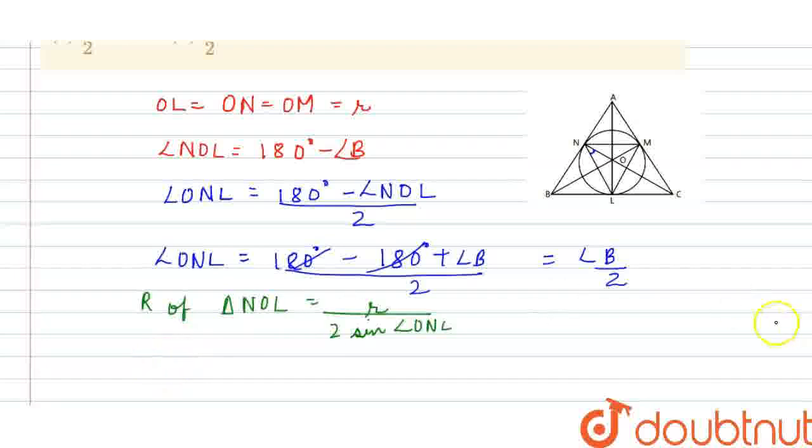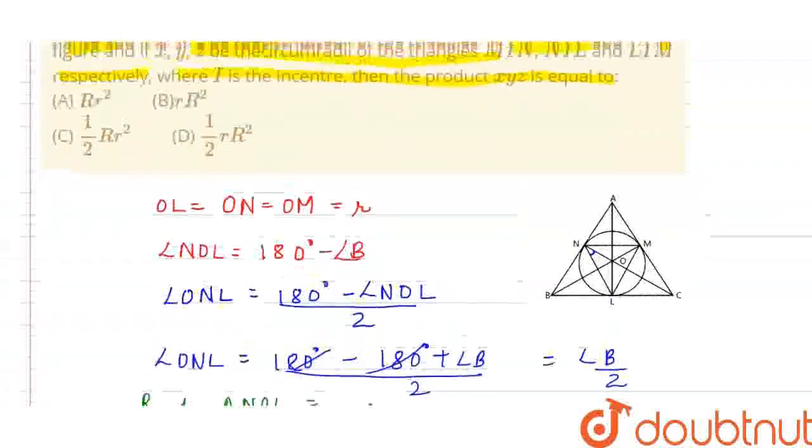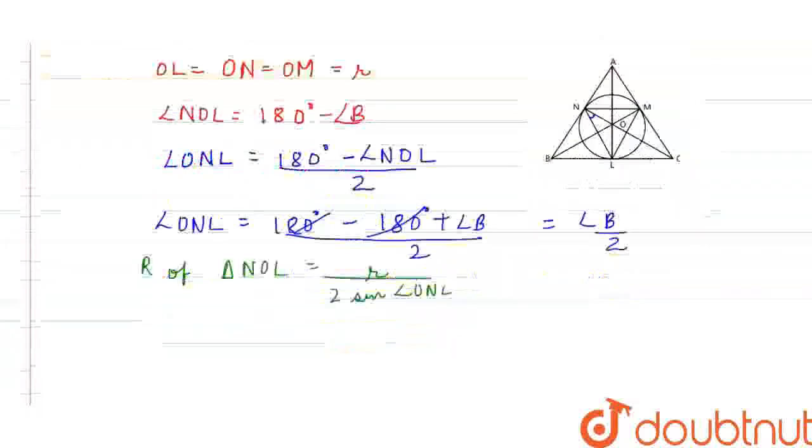Then we can say that, because it is mentioned in the question, that X, Y and Z are the circumradii of the triangles M-I-N, N-I-L, and N-L-I. So, if this is the case, then I can say X, Y, Z...